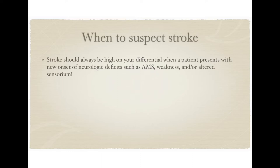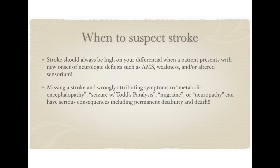So how do we recognize and suspect a stroke? A stroke should always be high on the differential whenever you have a patient who presents with a new onset set of neurologic deficits, such as altered mental status, weakness, or an altered sensorium. It's easy to mistake a stroke for other etiologies, including metabolic encephalopathy from electrolyte disturbances or infection, a seizure with Todd's paralysis, or a complex migraine which can sometimes include symptoms of hemiplegia or neuropathy. But mislabeling patients with actual strokes can be really serious, since if a stroke isn't caught and treated early, it can lead to permanent disability and even death.